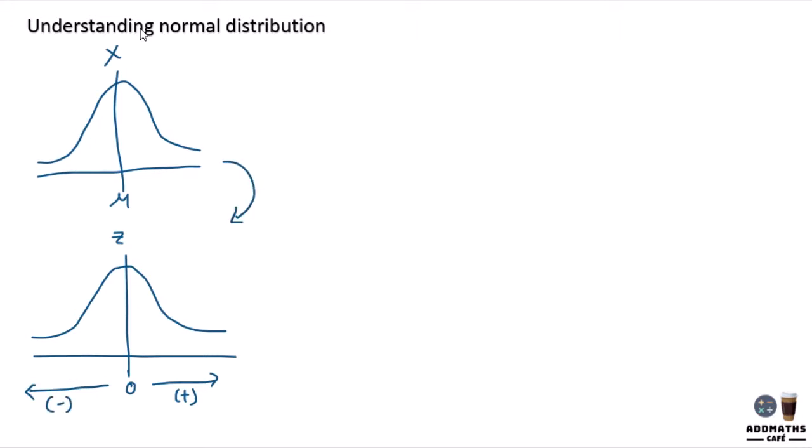So from x to change into z, it will be z equal to your x minus your mean divided by standard deviation. So this is how you transform an x value to a z value.